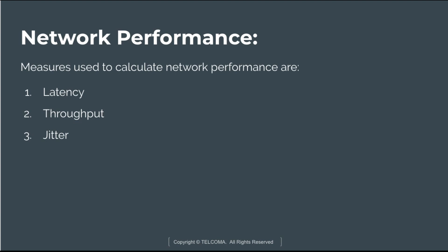The measures used to calculate network performance are latency, throughput, and jitter. Latency is also known as delay and is defined as the time required to transfer data across a network. Throughput is also known as capacity and is defined as the amount of data that can be transferred per unit time. Jitter is also known as variability and is defined as the changes in delay that occur and the duration of those changes.